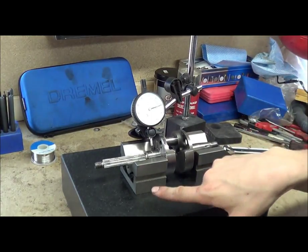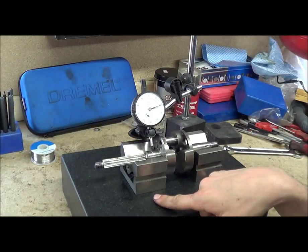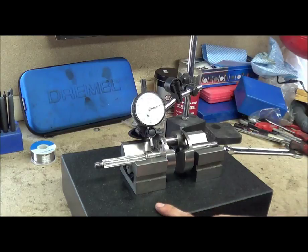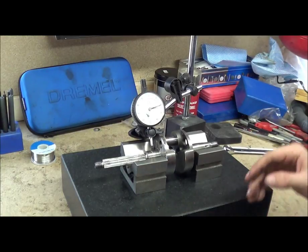So basically what we've got here is we've got two V-blocks and we've got an engineering surface or an engineering block. It's basically just a block of granite.